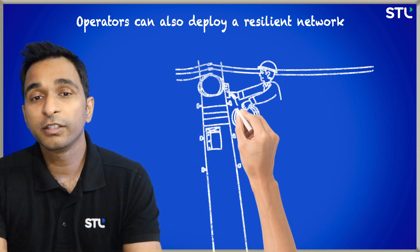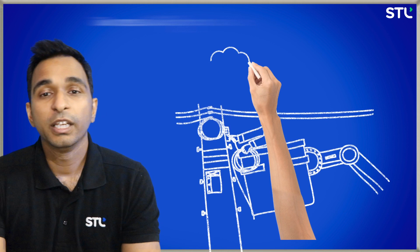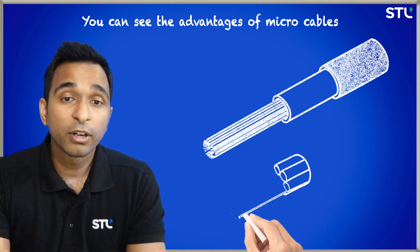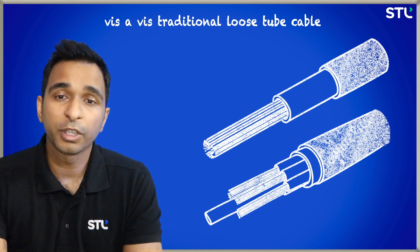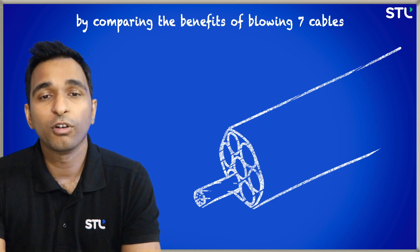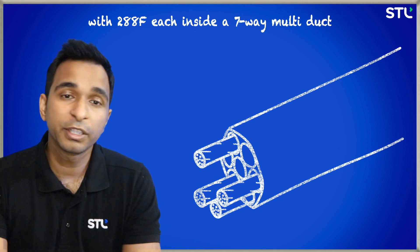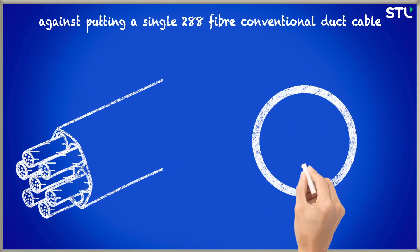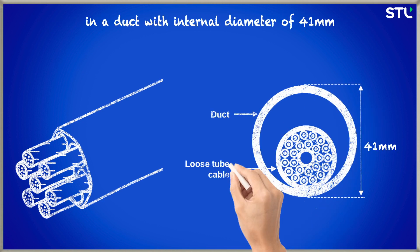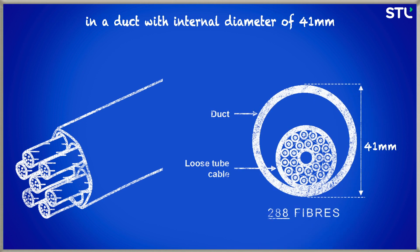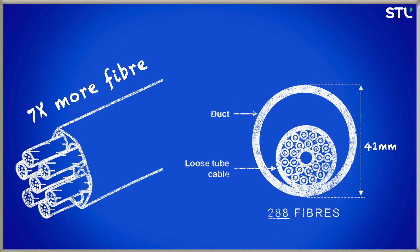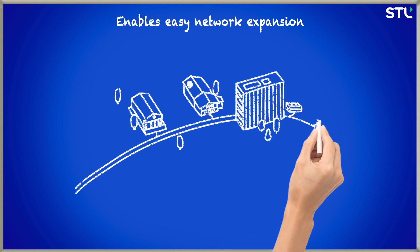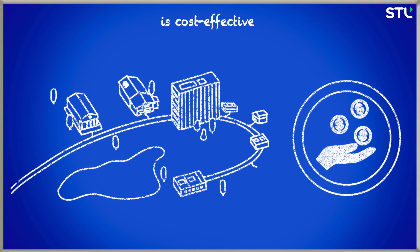Operators can deploy resilient networks with micro cables even in areas with poor weather conditions. You can see the advantages of micro cables versus traditional loose tube cables by comparing the benefits of blowing 7 cables with 288 fibers each inside a 7-way multi duct, against putting a single 288-fiber conventional duct cable in a duct with an internal diameter of 41mm. The micro cable solution accommodates 7 times more fiber, enables 4 times faster installation through air blowing, enables easy network expansion, and is cost-effective.